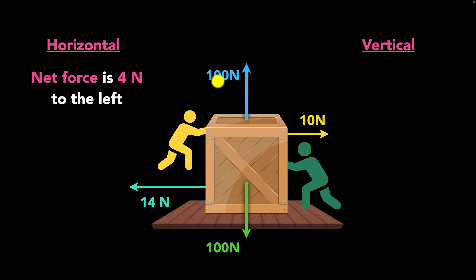So in the vertical, both forces are exactly equal and opposite. So when you subtract them, 100 minus 100, you get zero. So we would say the net force is zero in the vertical.